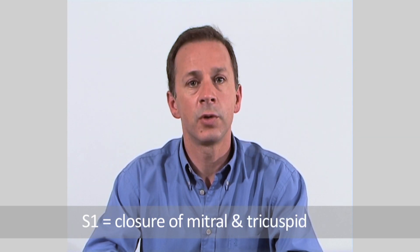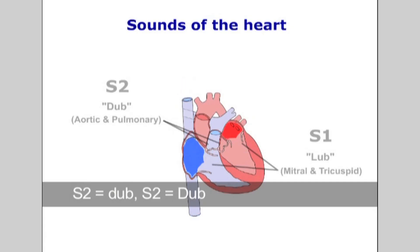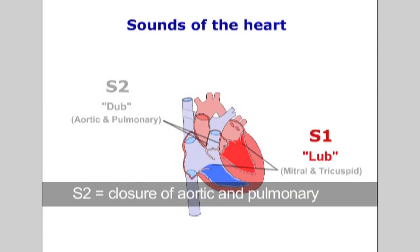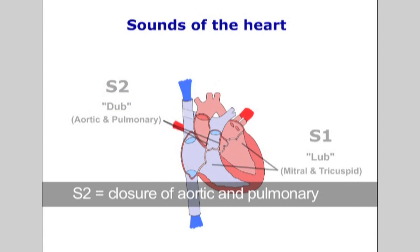The S1 sound, or lub sound, is produced by the near-simultaneous closure of the mitral and tricuspid valves. The S2, or dub sound, is produced by the closure of the aortic and pulmonary valves.